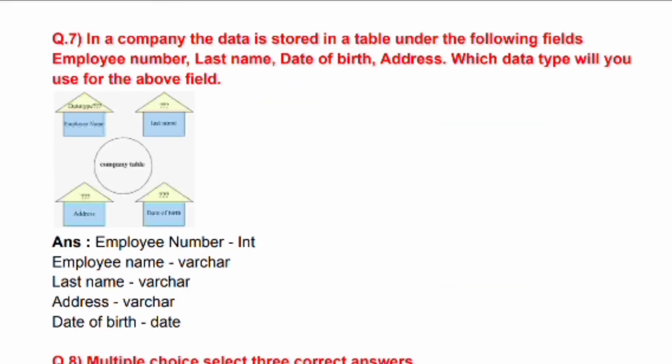Question No. 7: In a company, data is stored in a table with the following fields: employee number, last name, date of birth, address. Which data type will you use for each? Employee number: INT data type. Employee name: VARCHAR data type. Last name: VARCHAR. Address: VARCHAR. Date of birth: DATE.